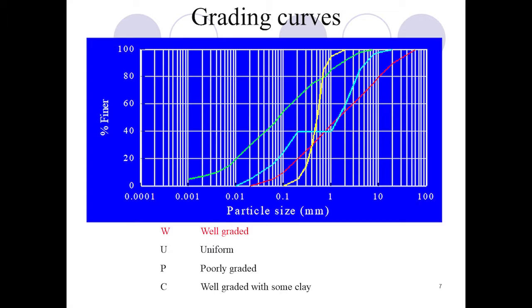The graph drawn between particle size and percentage finer is called a grading curve. There are different types of grading curves. If the curve is distributed across a wide range, it is well-graded, meaning all types of particles are present. If it is uniformly graded, only one type of particle is dominant.